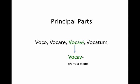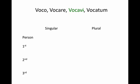We'll add our perfect endings to this. Now let's jump into a verb chart. Up top we have our verb: woko, wokare, wokawi, wokatum. For the perfect tense, you go to that third principal part in green, you drop off your 'i,' and that gives you your stem for all of these. Then to that stem, we're going to add our new endings.